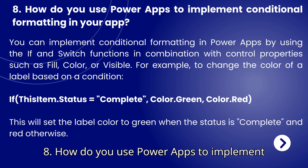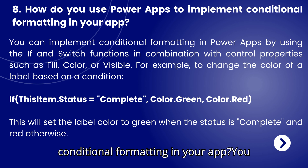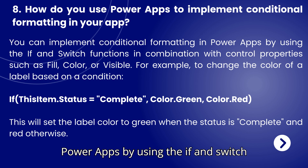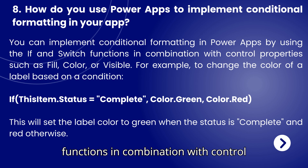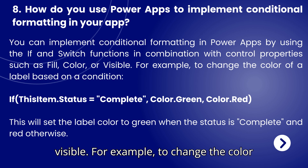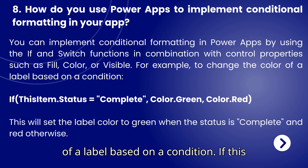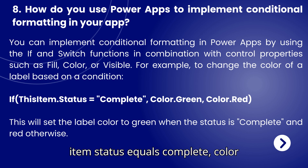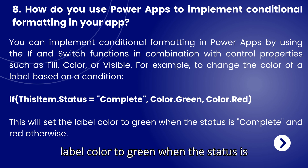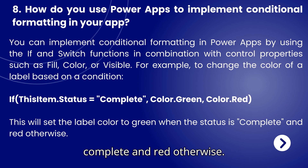Question 8: How do you use Power Apps to implement conditional formatting in your app? You can implement conditional formatting in Power Apps by using the If and Switch functions in combination with control properties such as Fill, Color, or Visible. For example, to change the color of a label based on a condition: If(ThisItem.Status = "Complete", Color.Green, Color.Red). This will set the label color to green when the status is complete and red otherwise.